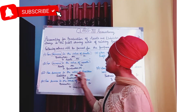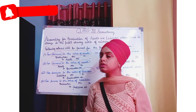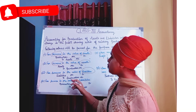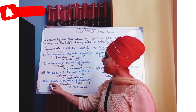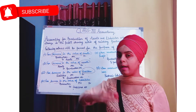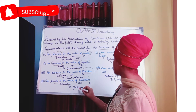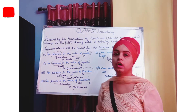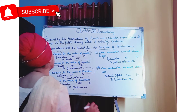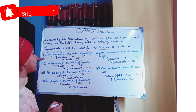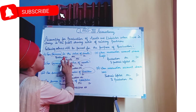Third is for Decrease in the value of liabilities. When our liabilities' value decreases, the entry is: Liabilities Account Debit, To Revaluation Account. Fourth is for Increase in the value of liabilities. When our liabilities increase, the entry is: Revaluation Account Debit, To Liabilities Account.